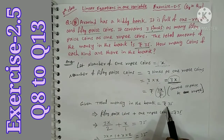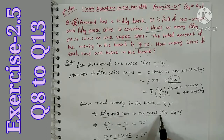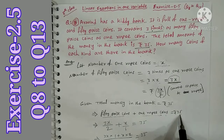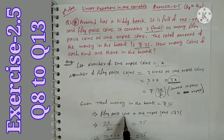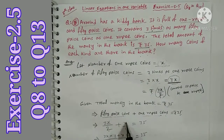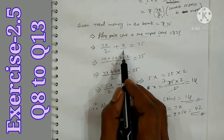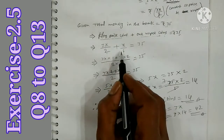The total money in the bank is Rs. 35. So the equation is: value of 50 paise coins plus value of 1 Rupee coins equals Rs. 35. That gives us 3x by 2 plus x equals 35. Now we simplify this fraction using cross multiplication.